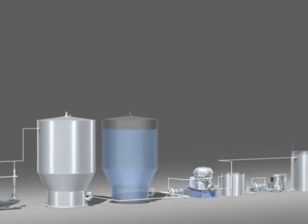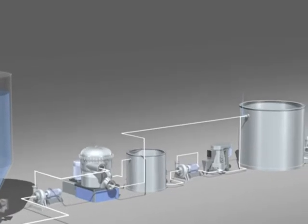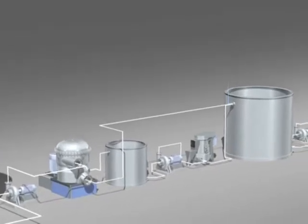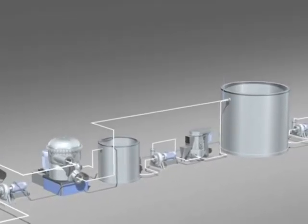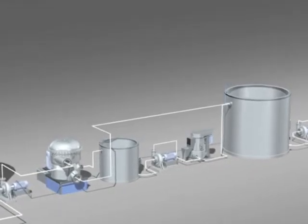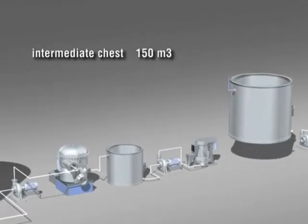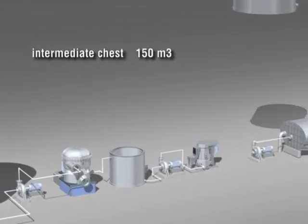With competent engineering, intermediate chests can be replaced by fan pumps. This principle is already familiar in the approach flow system. Its use in stock preparation, however, demands considerable know-how. Here, in the initial core screening stage, the first 100 cubic meter intermediate chest can therefore be removed.